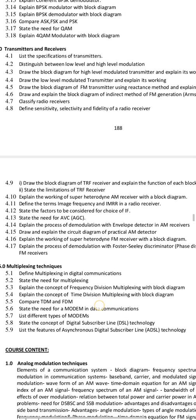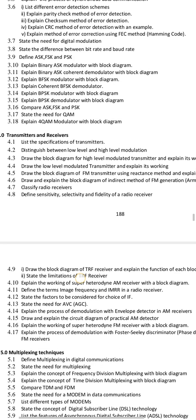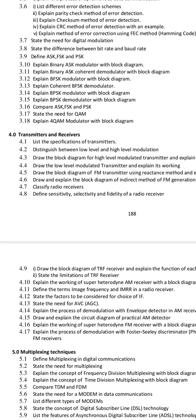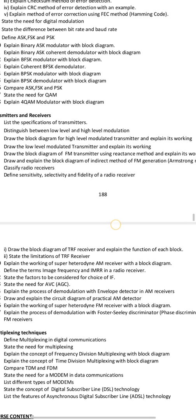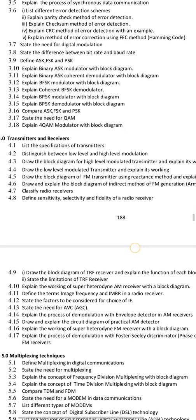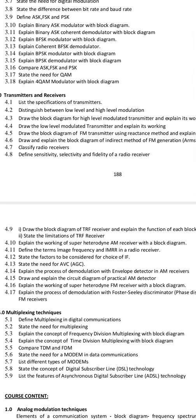In Chapter 5, frequency and time division is the first preference. Second preference is not a digital subscriber line. For transmitters, the concept of high level and low level transmitters is first preference, and Armstrong Method is second preference. Armstrong Method involves a block diagram, and it's a lot of block diagrams for transmitters.